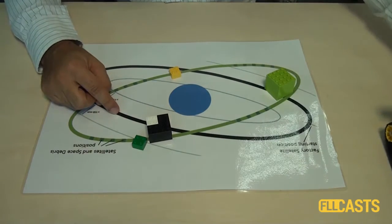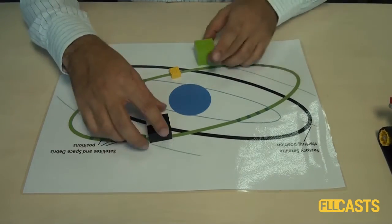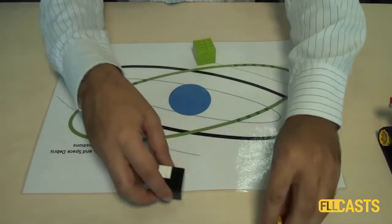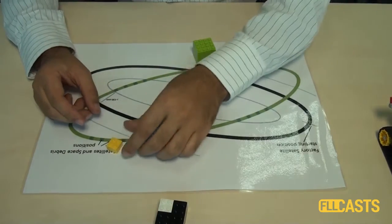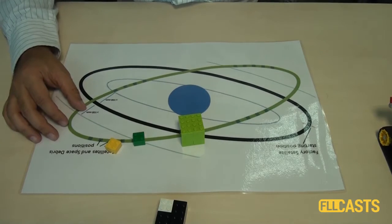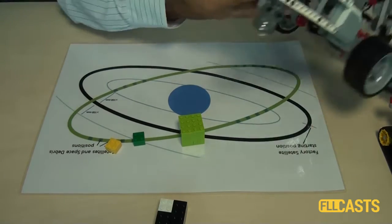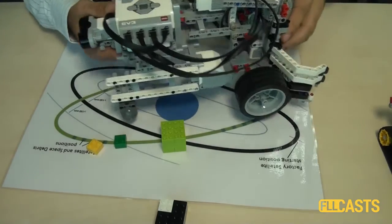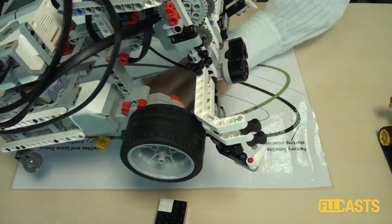And the other satellite, the green satellite, is our satellite and it must collect objects. So we came up with the construction and the construction looks like this. This here is the construction for the green satellite.